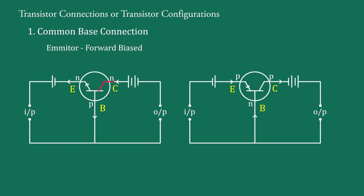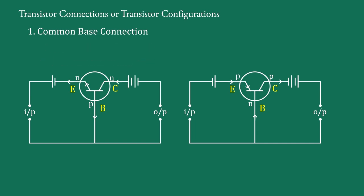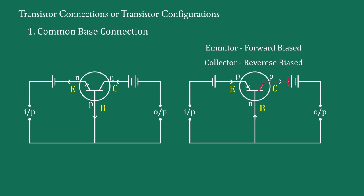The collector is also of N type and it is connected with the positive terminal of the battery, which means the collector is reverse biased. Similarly, in the PNP transistor, the emitter is of P type and it is connected with the positive terminal of the battery, so it is forward biased. The P type collector is connected with the negative terminal of the battery, so it is reverse biased.